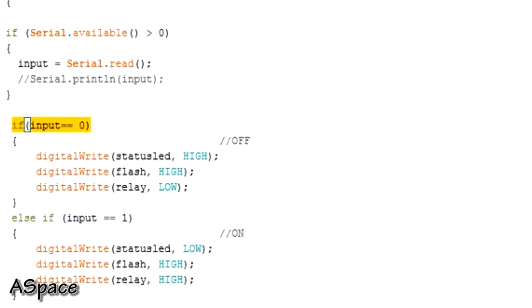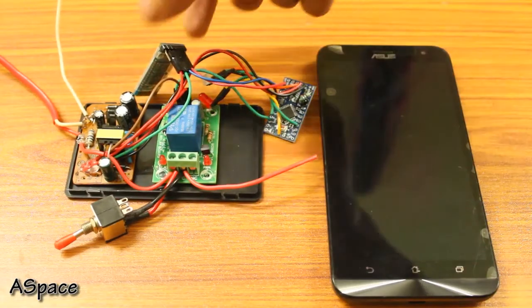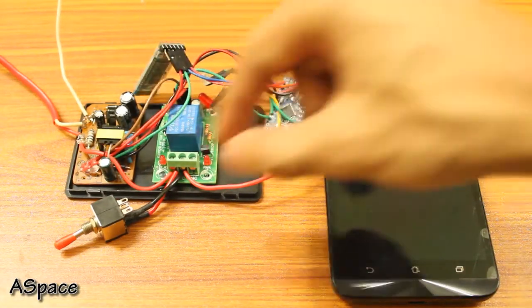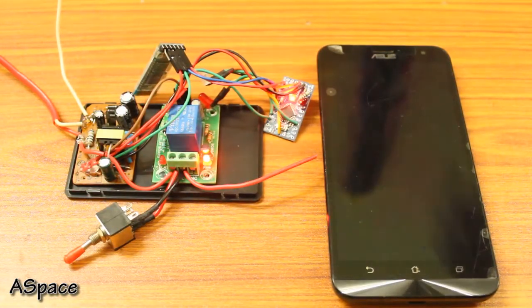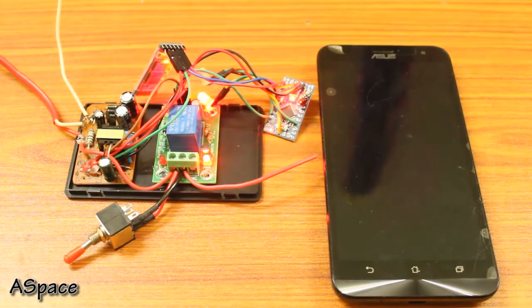Once the code was uploaded, it was time to give a test. Connect the Bluetooth module to the board and power on the board. Once you know everything is powered successfully, open the app and start controlling.